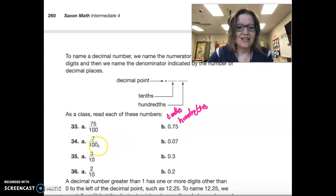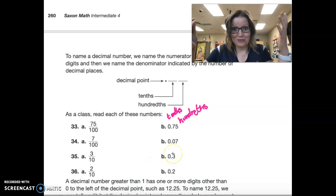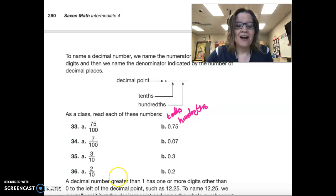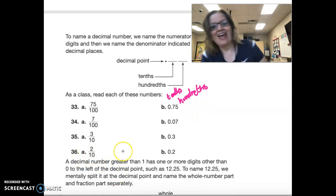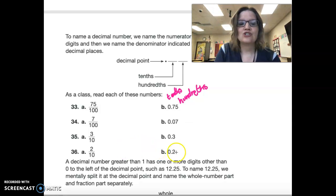We have seven hundredths. Seven hundredths. And now we have seven hundredths. In this situation, you can see that we have three tenths. And this is also three tenths. Finally, in thirty-six, we have two tenths. And this is how we say it. Two tenths.